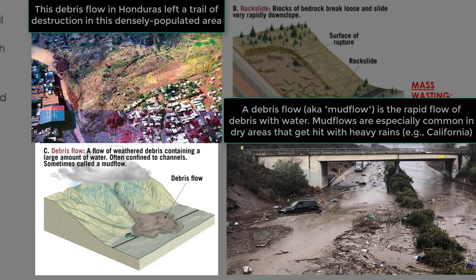The third example shown is a debris flow. A debris flow is a flow of weathered debris that contains a large amount of water. We sometimes call debris flows mud flows, and mud flows can be extremely devastating to communities living in low points of a valley.